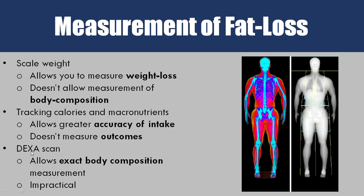Then we have a DEXA scan, which is what this image shows. A DEXA scan is essentially a machine that scans you and tells you your exact body composition to the gram — how much muscle, how much bone, and how much fat you have. However, it's quite impractical and somewhat expensive, so it's the most accurate but also the least practical.